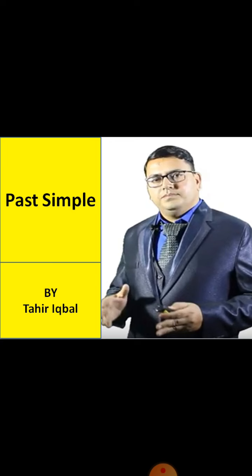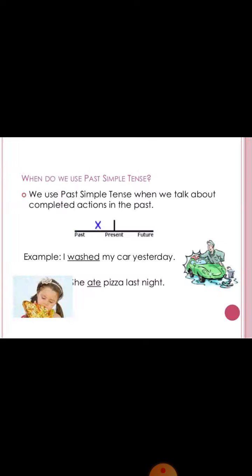We normally use past simple when an action happens in the past and finishes. We use past simple tense when we talk about a completed action in the past.